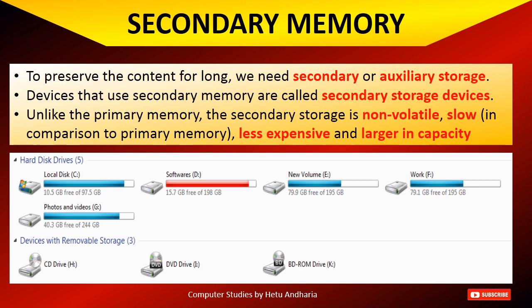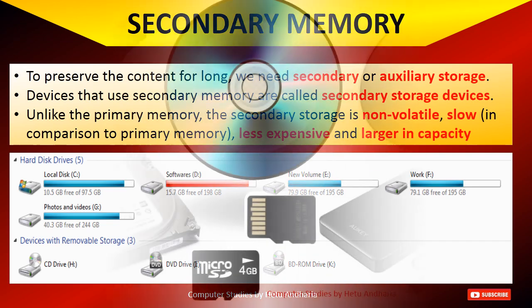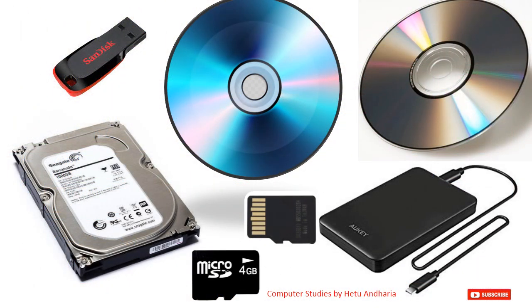Devices that use secondary memory are called secondary storage devices. Unlike primary memory, secondary storage is non-volatile. Its characteristics: it is non-volatile, it is slow in comparison with primary memory, it is less expensive, and larger in capacity. Compare the size of a hard disk — it is 1 TB — while the size of a RAM is 4 GB or 8 GB. So secondary memory is always larger. Secondary memory devices include hard disk, drives, memory cards, CDs, and DVDs. Anything saved there is stored permanently and can be used anytime.